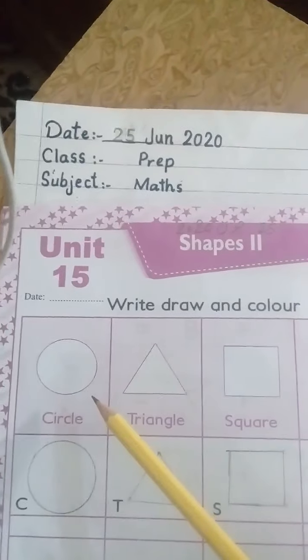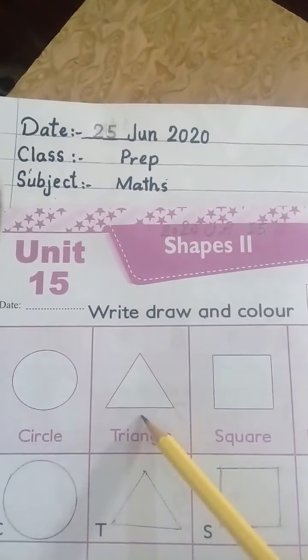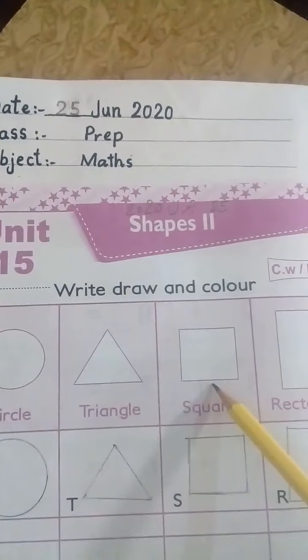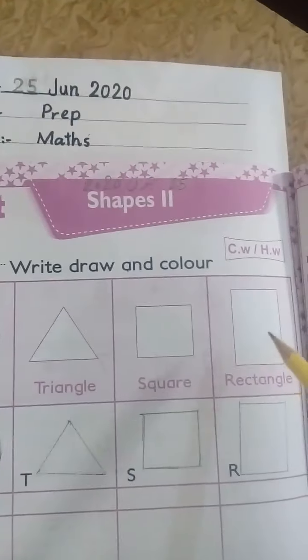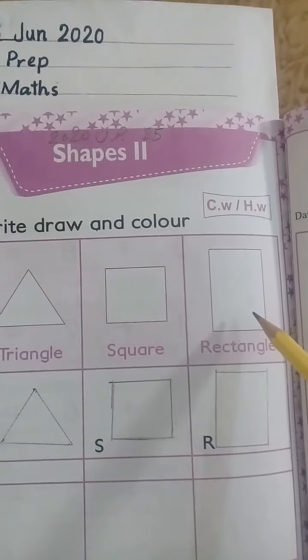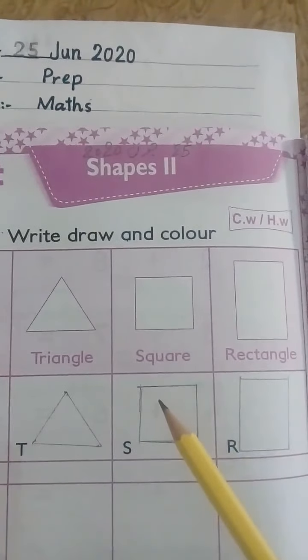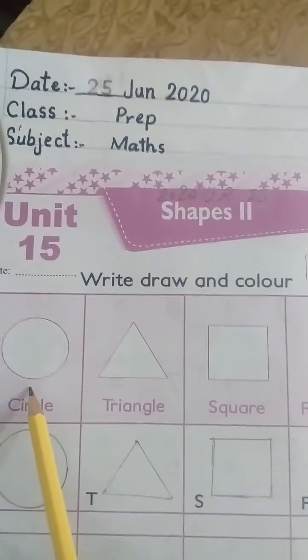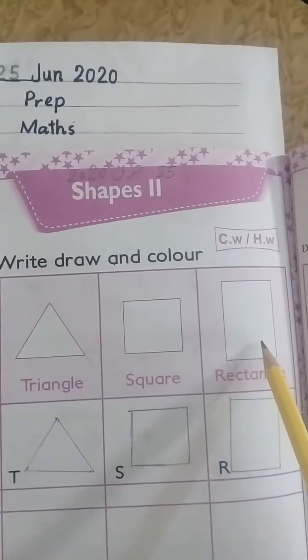Let's check first, which kind of shapes are these? This one is circle shape. And this one is triangle. And which kind of this? Square. And which kind of shape is this? Rectangle. Very good. So we have four kinds of shapes on this page. Circle, triangle, square, rectangle.